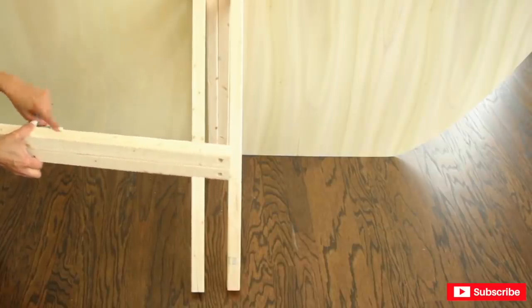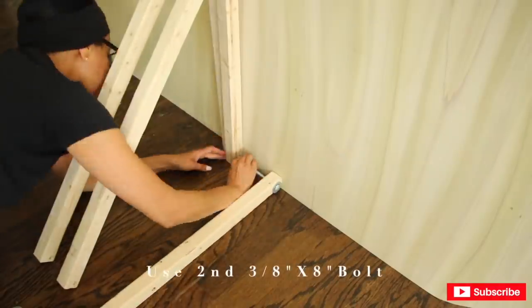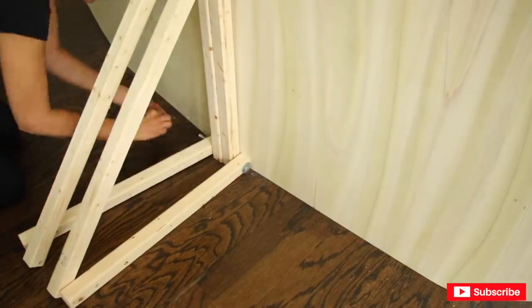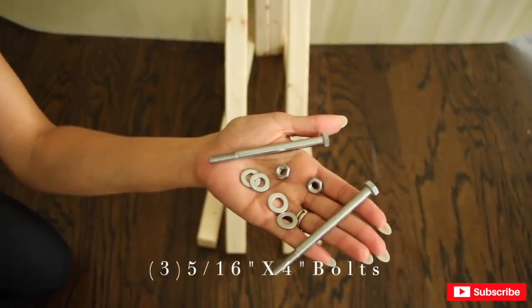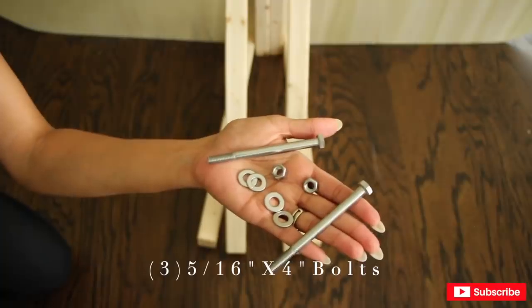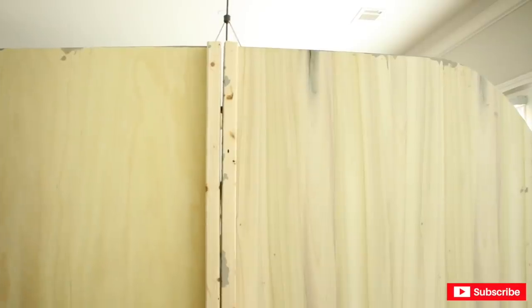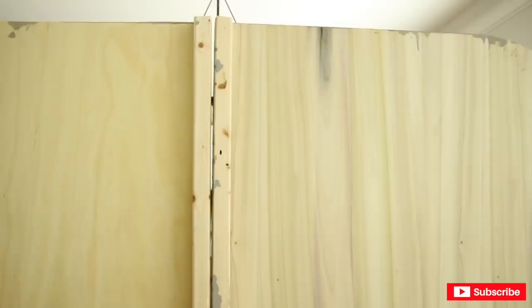I'm going to grab my smaller sticks, which are my two-foot sticks, and I'm going to place my last two bolts, which are 5/16 by four inches. These also have two washers and a nut. As you can see, there's a little bit of a gap here. I was thinking about placing hinges, but I don't think I need it.